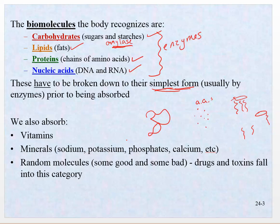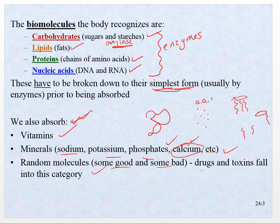We also absorb vitamins and minerals — things like sodium and potassium. We know what those are good for: they're electrolytes used for depolarization, repolarization, muscle function, buffers, building bones, second messenger systems — calcium does a whole lot. And then there are random molecules: some are good and some are bad. Drugs fall into that category, but so do toxins. Sometimes the body absorbs things that can either be beneficial or toxic, and usually those are eliminated quickly in the renal system.